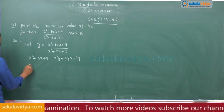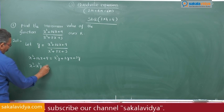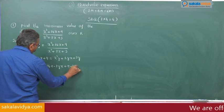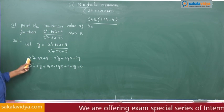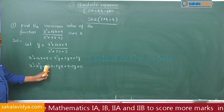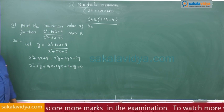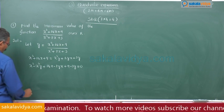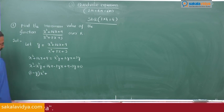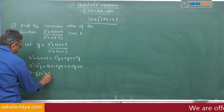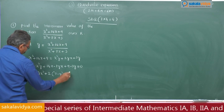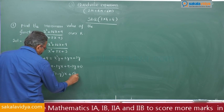Bringing all terms to one side: x² − x²y + 14x − 2yx + 9 − 3y = 0. Taking x² common: (1 − y)x² + 2(7 − y)x + (9 − 3y) = 0.